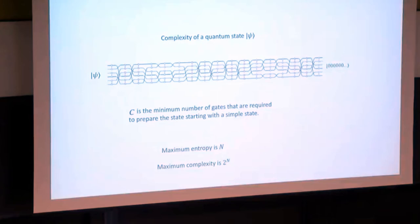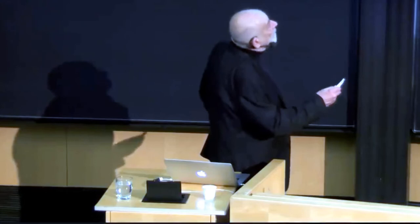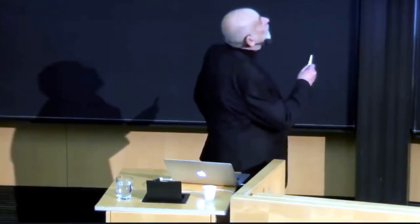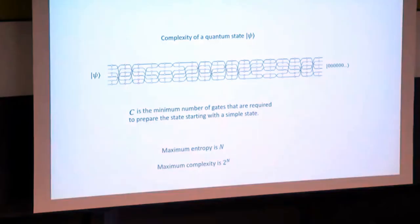The definition of complexity is the minimum number of gates that it takes. Starting with something simple and easy to describe, how many gates does it take, the minimum number, to get you to the state of interest? That minimum number is called the quantum computational complexity of psi. It's a property of the state of the system. How complex is it? How hard is it to make?